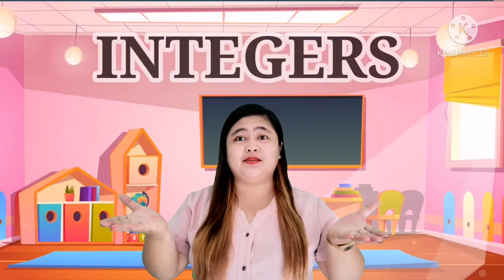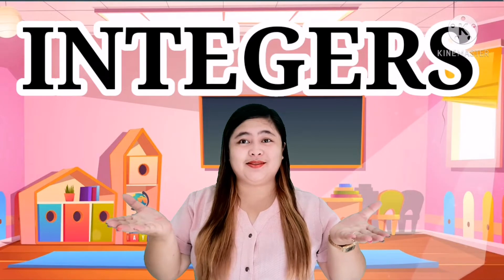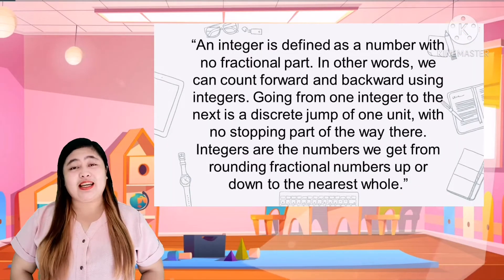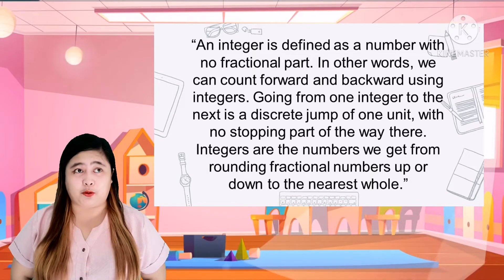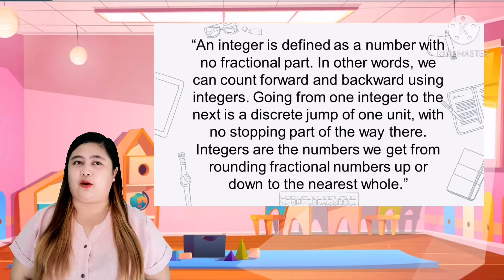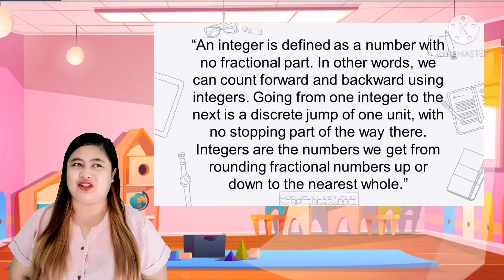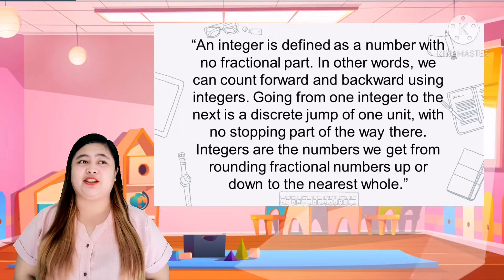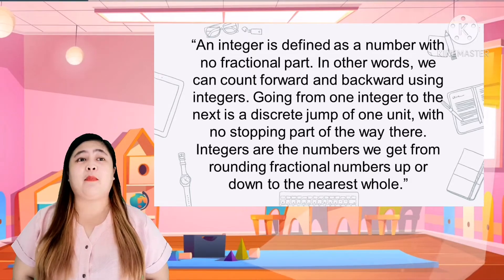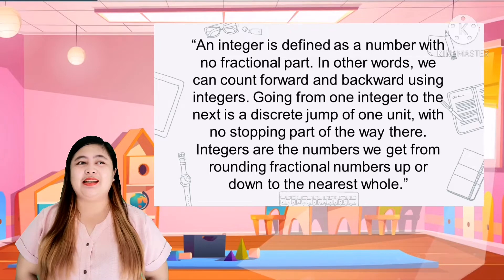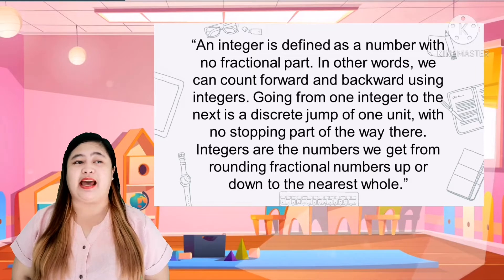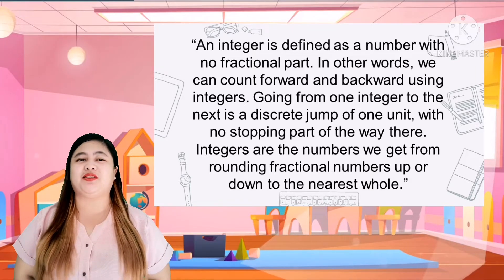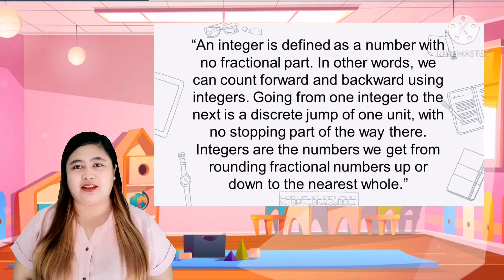Let's define what integers are. Integers are defined as whole numbers with no fractional part. We can count forward and backward using integers. Going from one integer to the next is a discrete jump of one unit with no stopping partway there. Integers are the numbers we get from rounding fractional numbers up or down to the nearest whole.